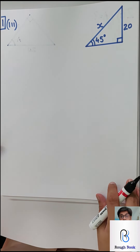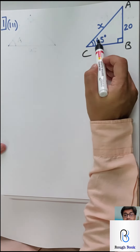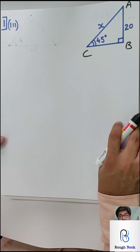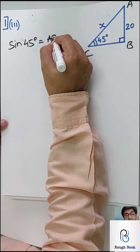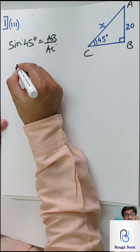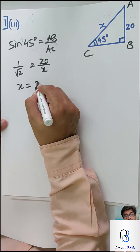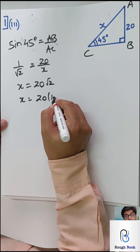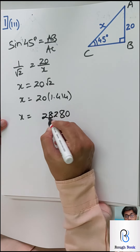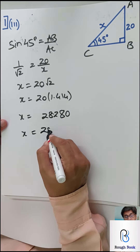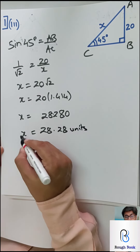Sum 1 Part 3. Name it ABC — 20, 45 degrees, and x. With respect to 45 degrees: opposite upon hypotenuse, so again sine. Sine 45 equals AB upon AC. Sine 45 is 1 by root 2. AB is 20 and AC is x, so x becomes 20 root 2. Root 2's value is 1.414, so x will be 20 times 1.414 equals 28.28 — write the units as given. Final answer: 28.28.